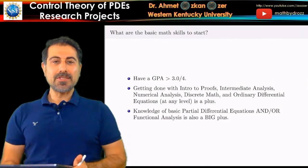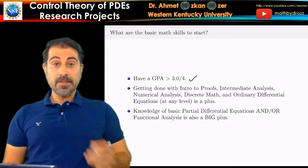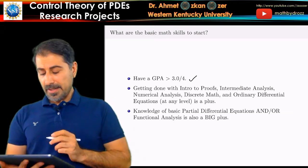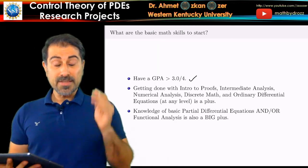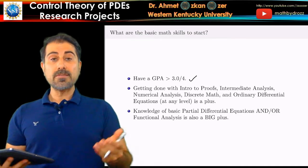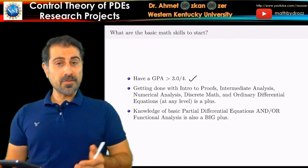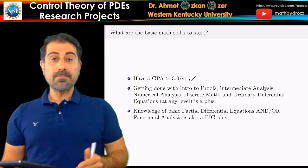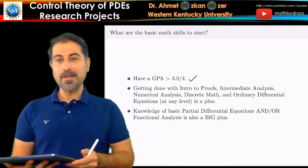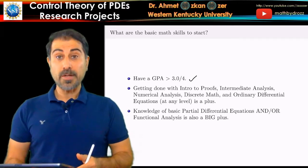So what are the basic math skills to start a research project with me? First, have a GPA greater than 3.0 out of four. Getting done with one of these courses is a big plus: intro to proofs, intermediate analysis, numerical analysis, discrete math, ordinary differential equations at any level. Knowledge of basic partial differential equations and/or functional analysis is also a big plus. But if you haven't taken some of these courses, you can still initiate a research project with me.